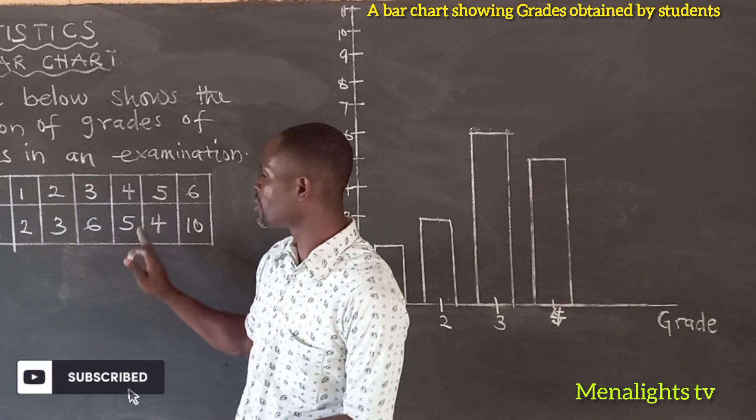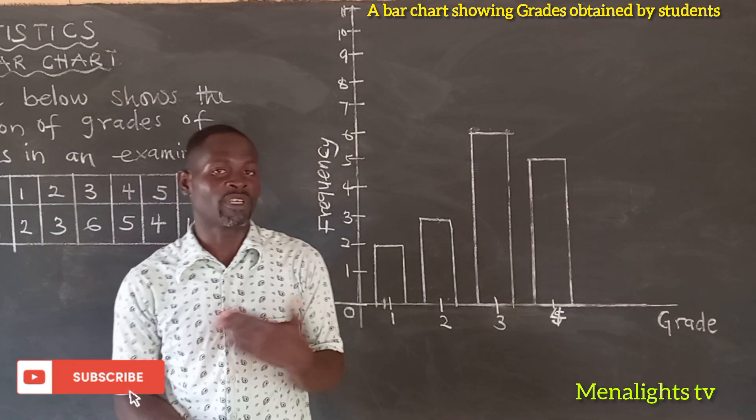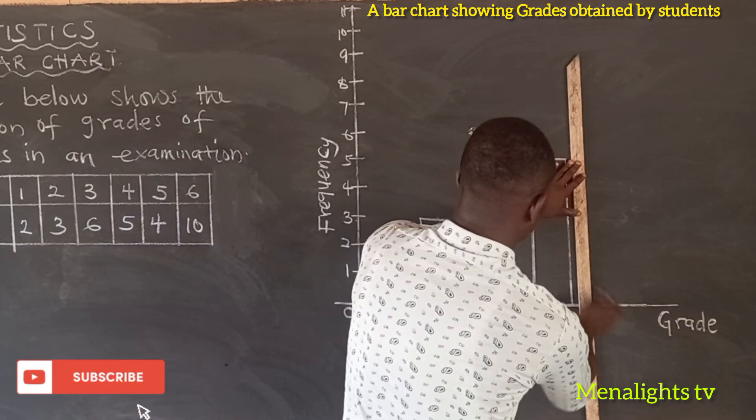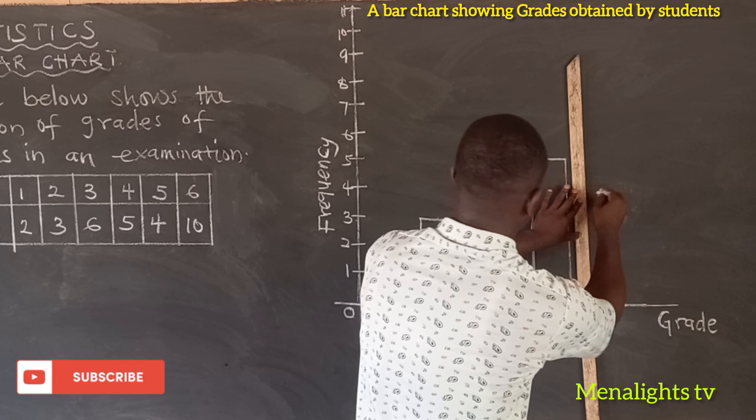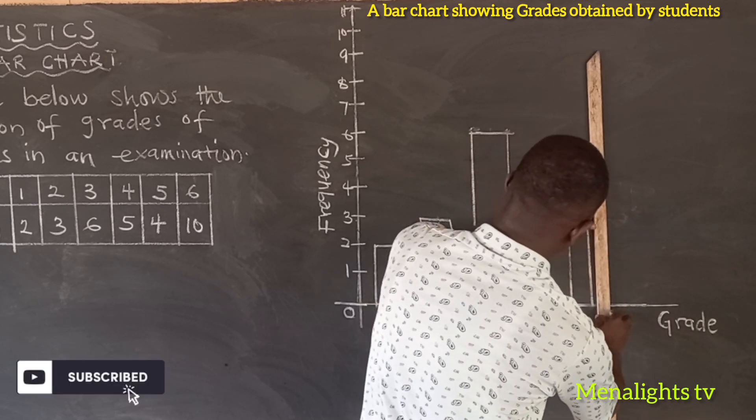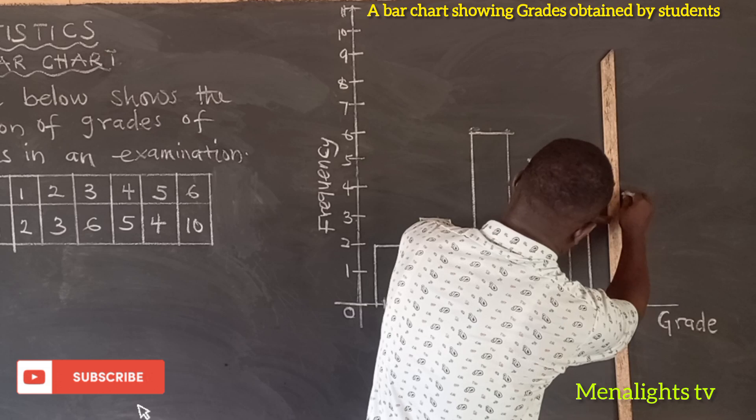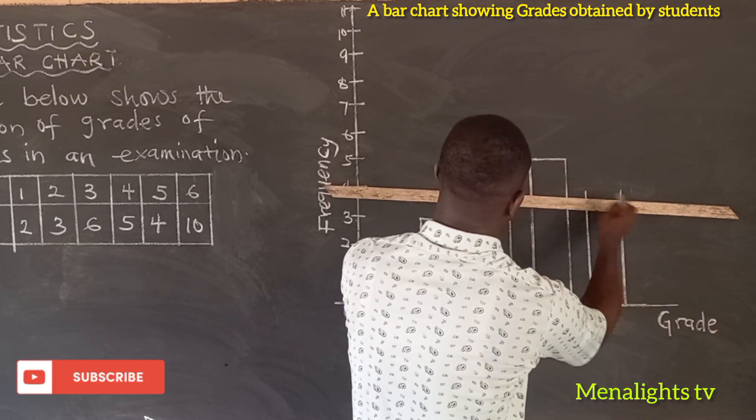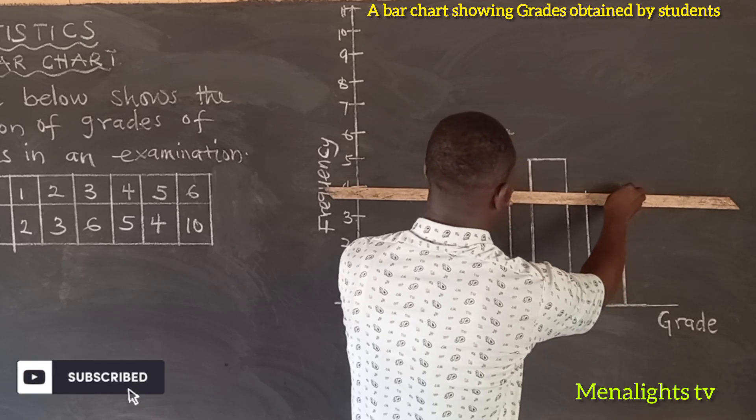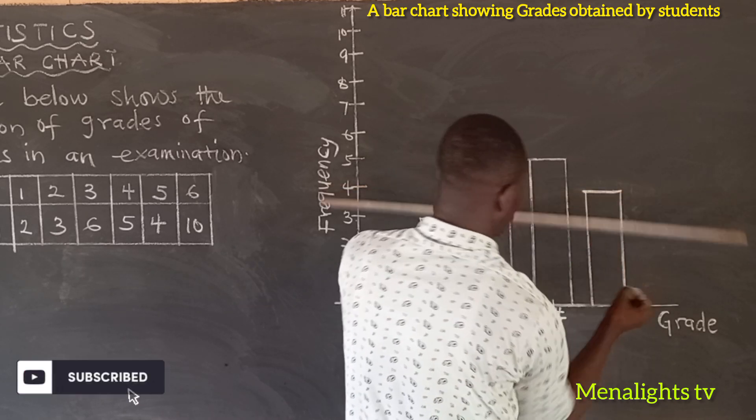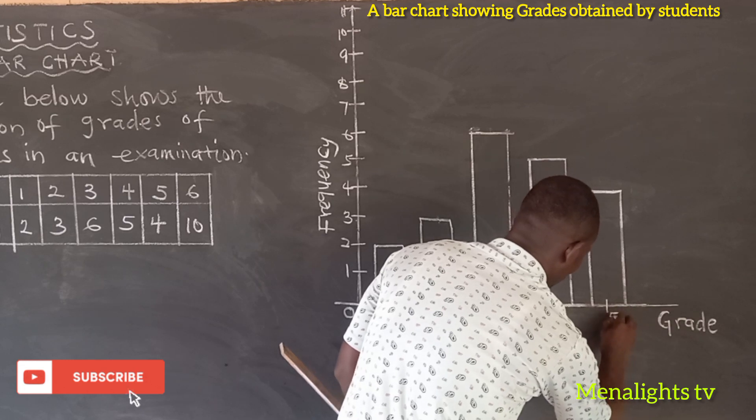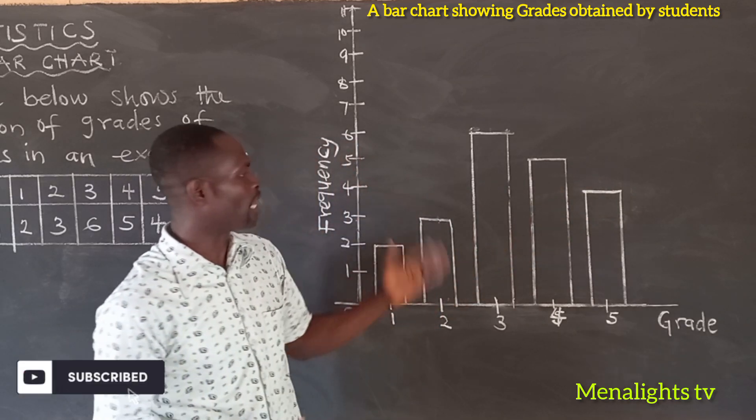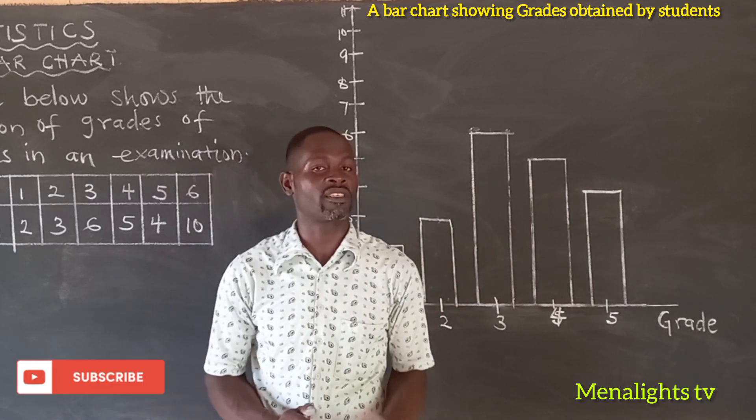Now we come to grade 5, which is having a 4 as its frequency. That means 4 students obtain that grade, so grade 5, 4 students. The grade 5 here is having 4 students as well, a frequency of 4 students obtain that grade.